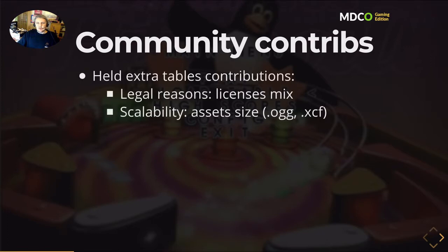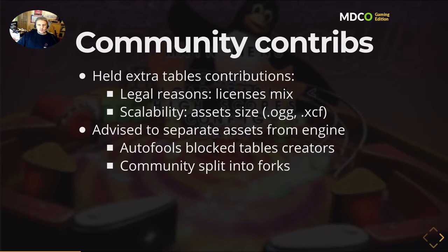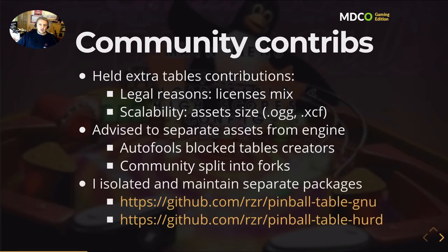There were some patches from the community, which is pretty cool, and even some extra tables. But for legal reasons, I didn't want to taint the main project with assets under different licenses. It can be a nightmare to maintain, and it can cause scalability issues because asset sizes can be quite large, so I didn't want to mix data and source too much. I suggested authors create their own projects and make them external plugins for Emilia, since it's already designed to work that way. But I believe AutoTools — or AutoFools as I say — blocked creators from maintaining their own tables. So they integrated their tables into their own forks, and there were different projects ongoing. That's the problem I decided to solve recently: I isolated the code and now I'm maintaining a separate package for each table.